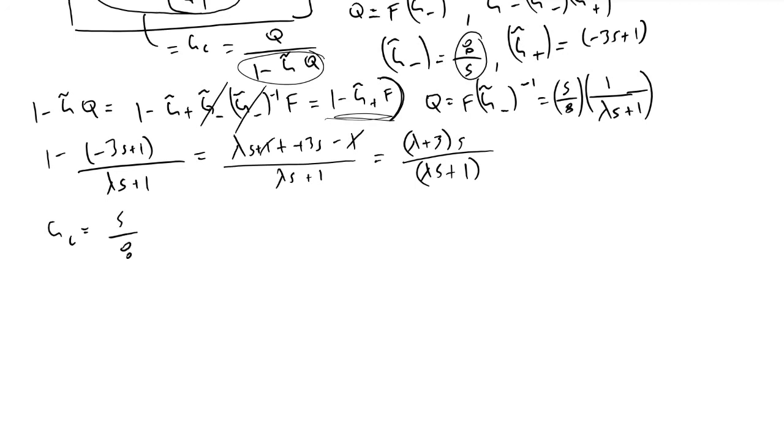which was S over 8 times the quantity 1 over lambda S plus 1. And we're going to now multiply it by the inverse of this, because 1 minus G tilde times Q was in the denominator of GC.